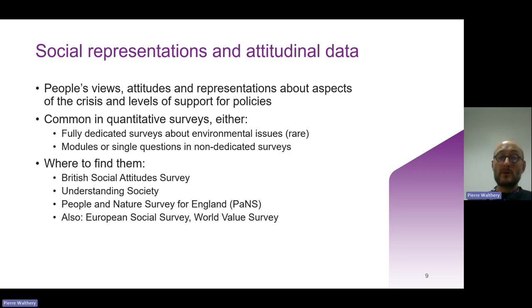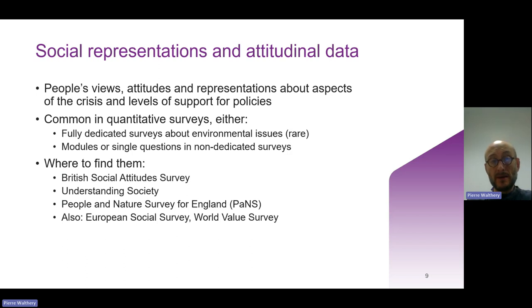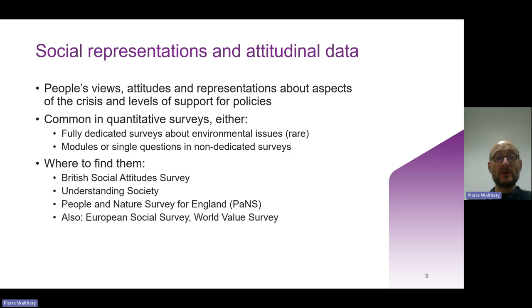What are the main studies where you would find attitudinal data? There are many, but just looking at the four main ones: I would mention the British Social Attitudes Survey, which is the mainstay of social attitudes data for the UK. Understanding Society is a large-scale longitudinal study with attitudinal data. A specific survey on nature and the environment is the People and Nature Survey for England. And if you're interested in international data, the European Social Survey or the World Values Survey.